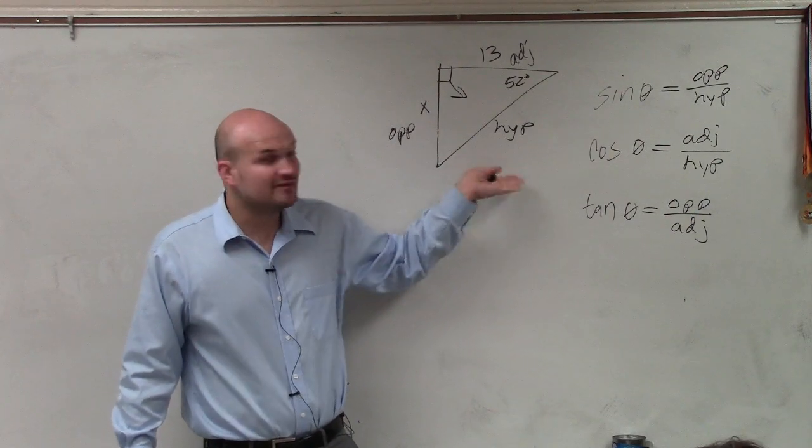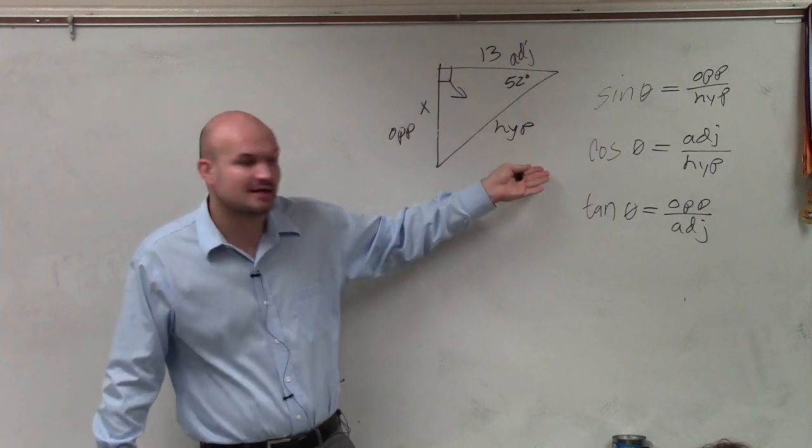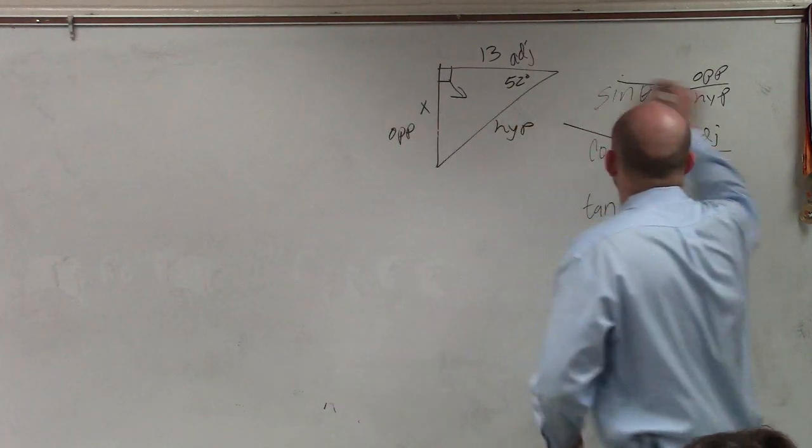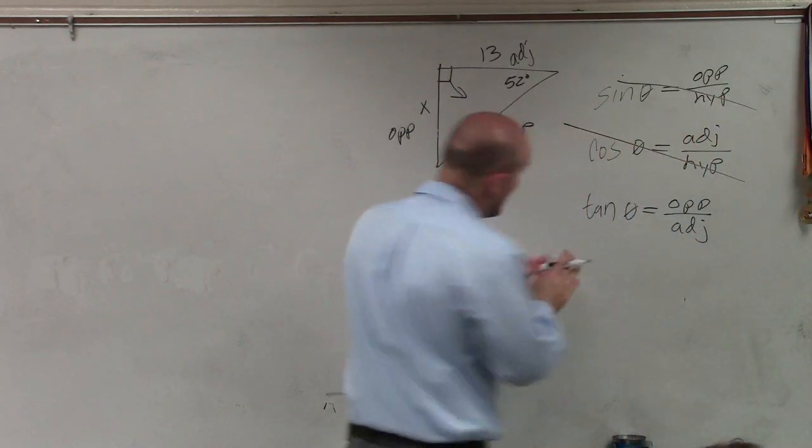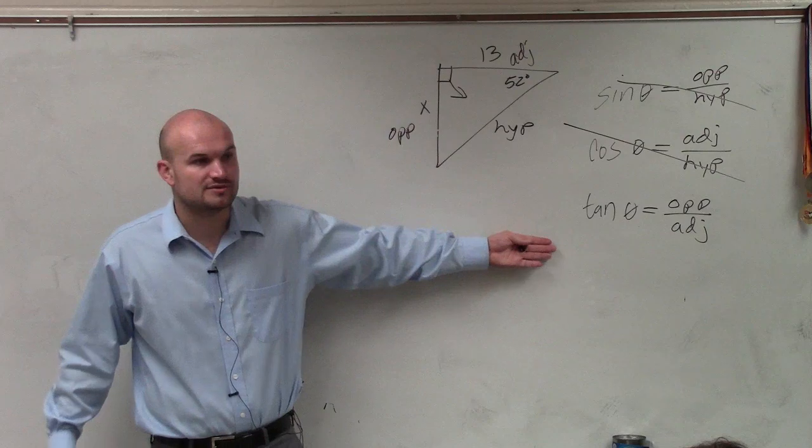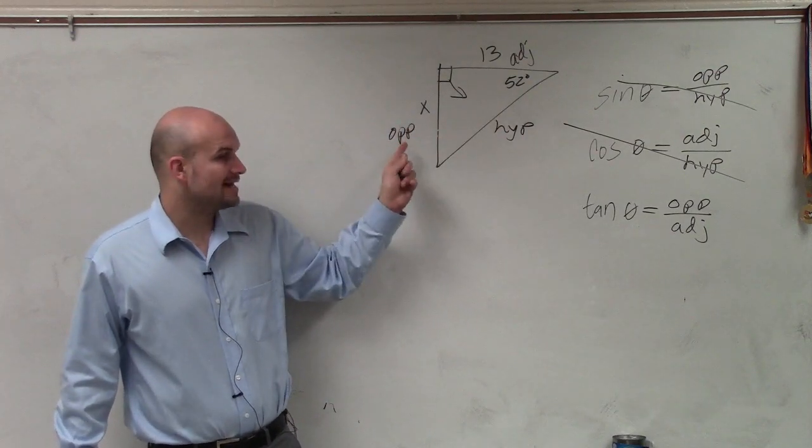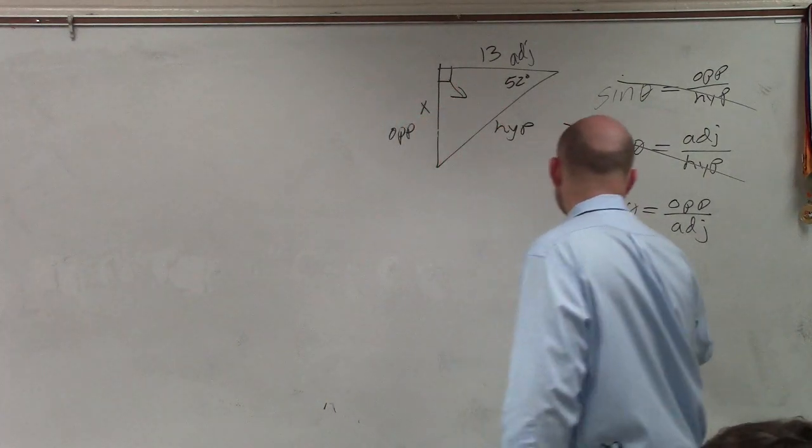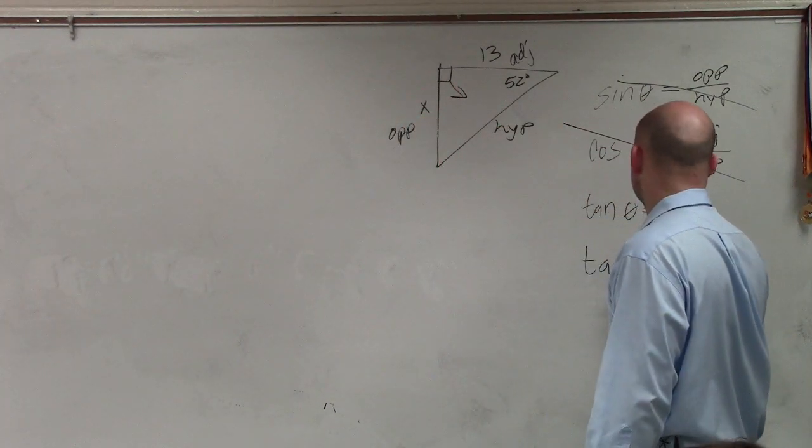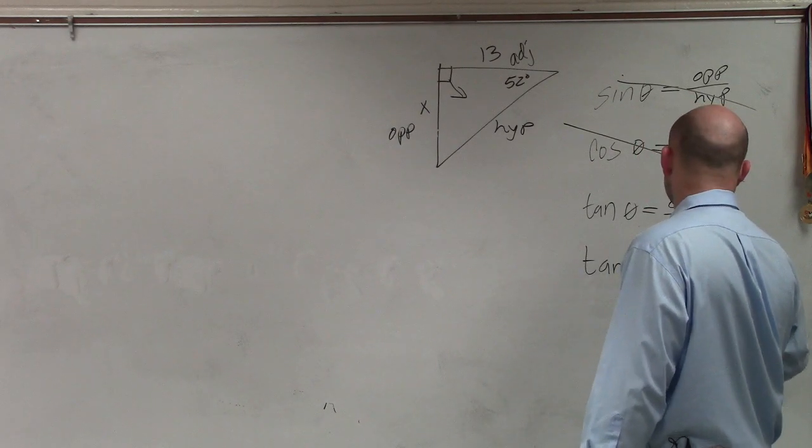So therefore, any trigonometric function with hypotenuse, I'm not going to use. So I'm only going to use the tangent function. Now, do I know the angle of the tangent that I'm going to use? 52 degrees. Do I know the opposite side? X. Do I know the adjacent side? 13. So I can say the tangent of my angle, 52 degrees, is equal to x over 13.